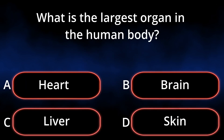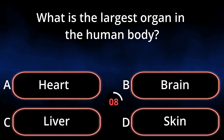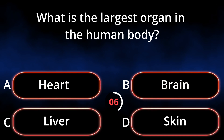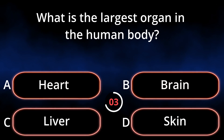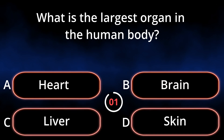What is the largest organ in the human body? A. Heart. B. Brain. C. Liver. D. Skin. Answer: Skin.